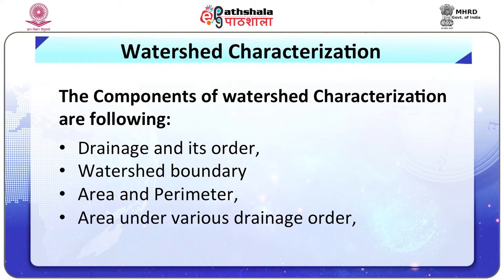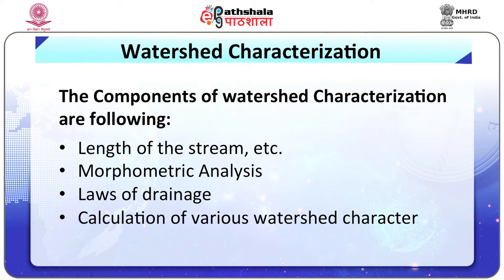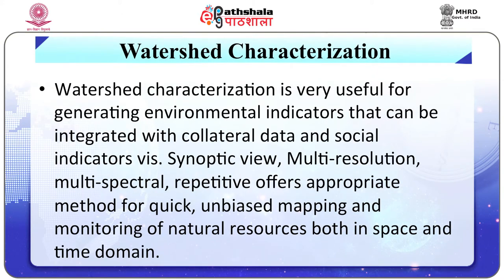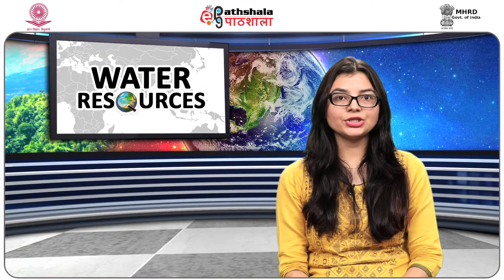The components of watershed characterization are: drainage and its order, watershed boundary, area, perimeter, area under various drainage orders, length of the stream, morphometric analysis, loss of drainage, and calculation of various watershed characteristics. Watershed characterization is very useful for generating environmental indicators that can be integrated with collateral data and social indicators like synoptic view, multi-resolution, and multispectral mapping and monitoring of natural resources both in space and time domain.